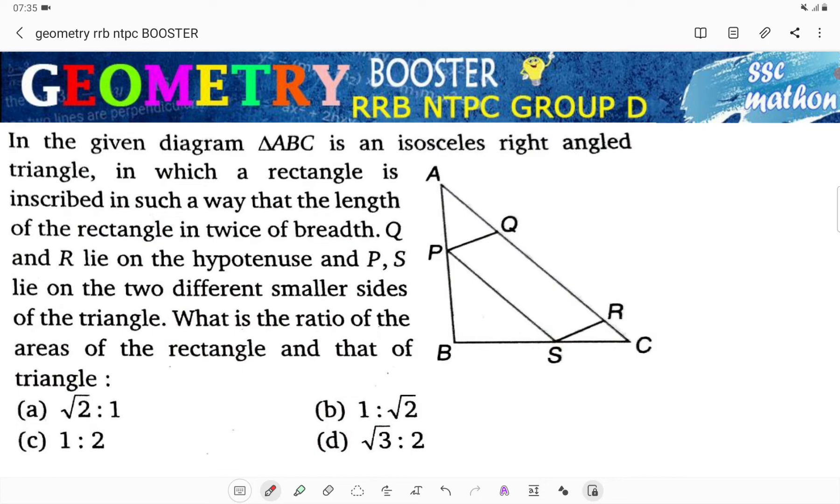In the given diagram, ABC is an isosceles right-angled triangle in which a rectangle is inscribed in such a way that the length of the rectangle is twice the breadth.